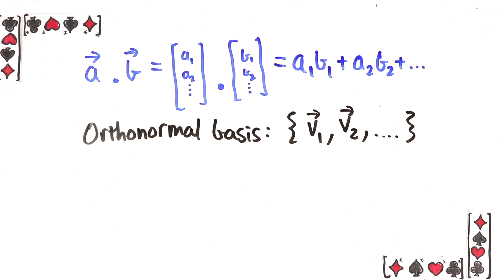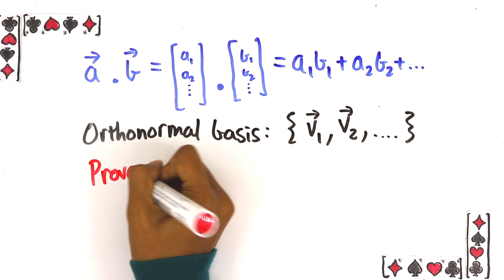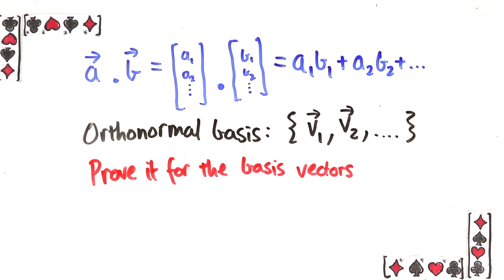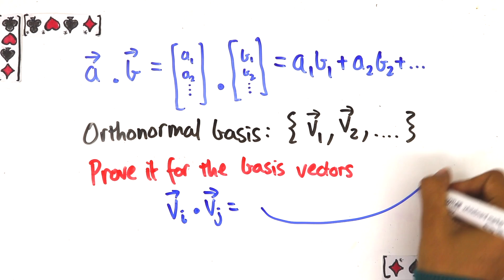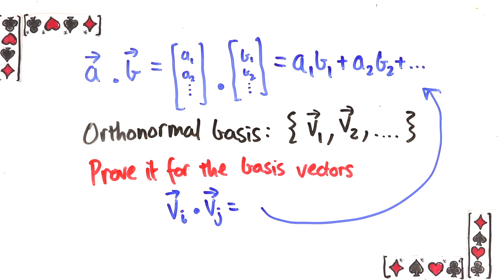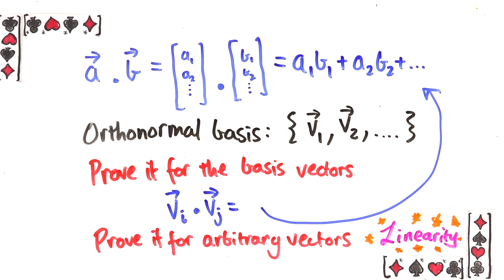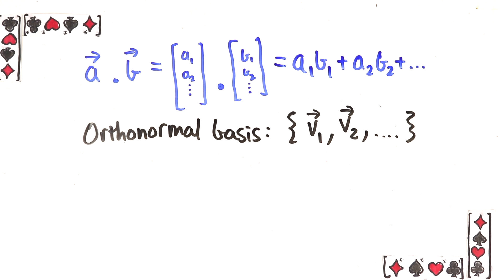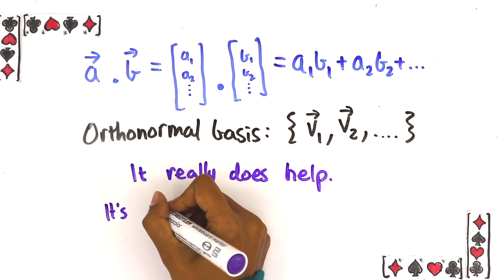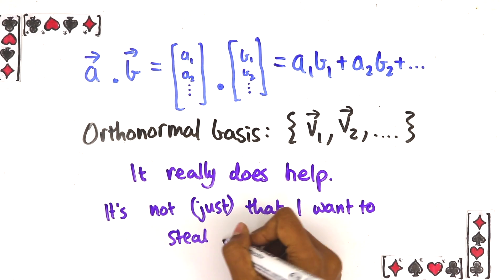To prove this formula works what I want you to do is first prove it for a very simple case. Prove that it works in the case where the vectors are the orthonormal basis vectors themselves. So if you took the dot product of the ith and jth basis vector then you could use this formula and get the right answer. Once you've proved that it's up to you to figure out how to prove it for the arbitrary case using the linearity property from the previous question. Give it a go and even if you get stuck please write what you did in the comments. Again you might end up with a different proof from mine in which case I would love to see that.